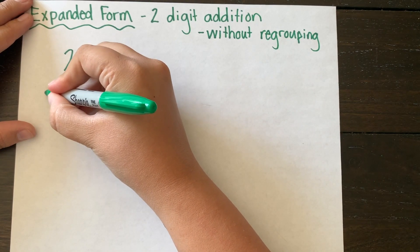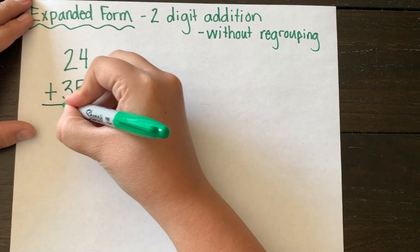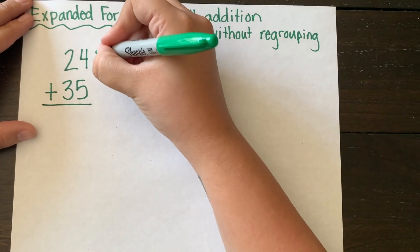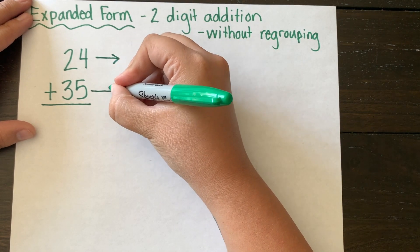So our first problem today is going to be 24 plus 35. I'm writing it vertically. Then I'm going to draw my arrows to show where I'm going to expand those numbers out.